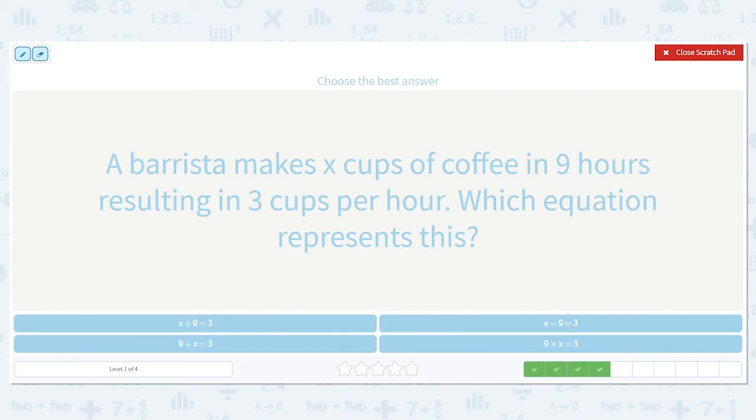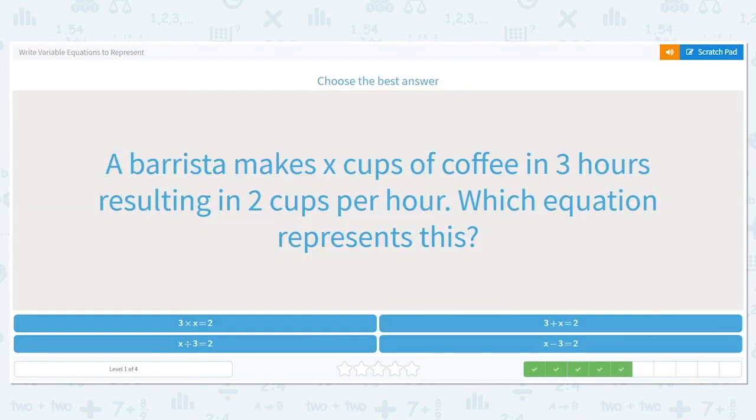Okay, so a barista is making x cups of coffee in nine hours, so there's three cups per hour. Okay, so we know our answer is three. We need to know how many cups of coffee in nine hours. So that would be, because we want to break it down into a smaller amount because it's three cups per hour. That means we have to get smaller, so it's either division or subtraction. We're breaking it down to the same amount.